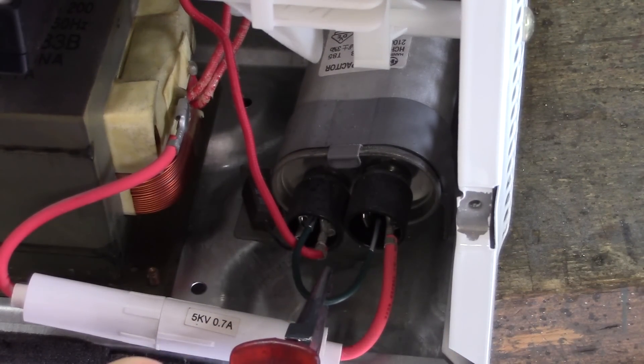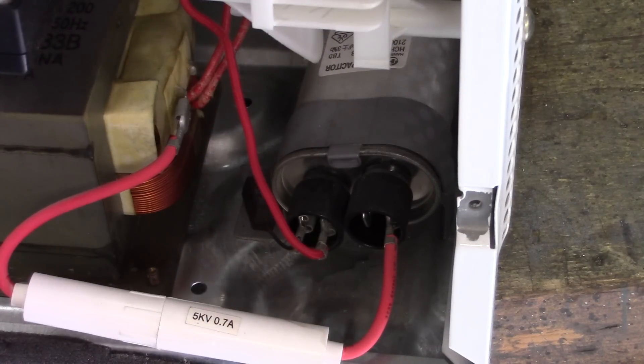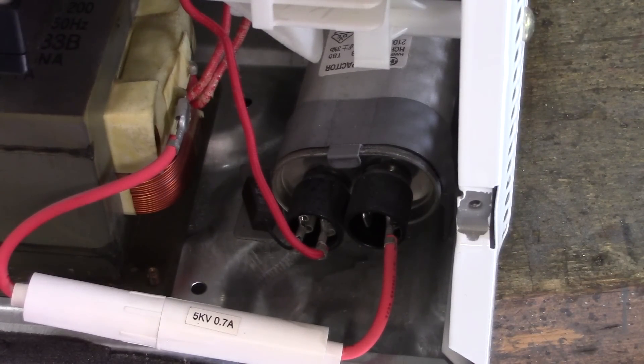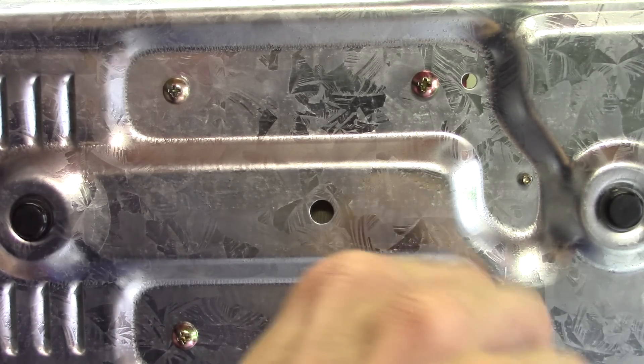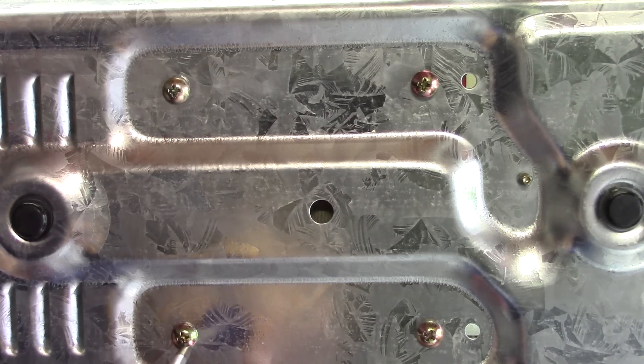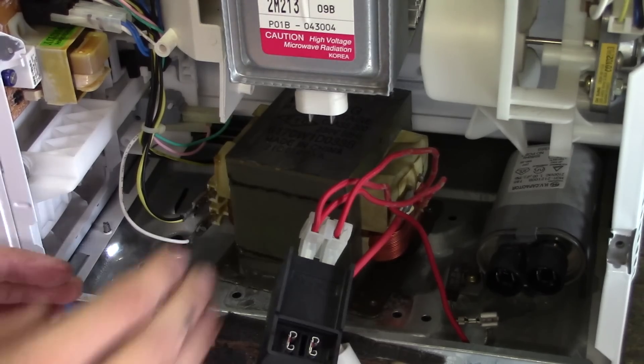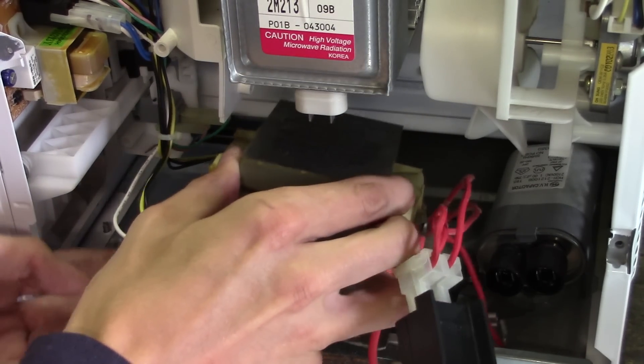Don't touch any of the capacitor's contacts until you know for sure that it's discharged. Otherwise you might get shocked pretty badly. Next we can simply undo all of the screws that hold the transformer in position. Now we can safely remove the transformer.